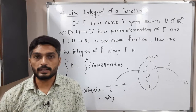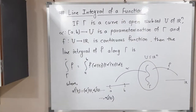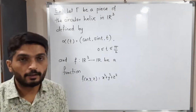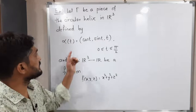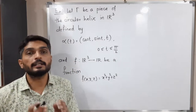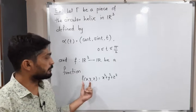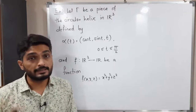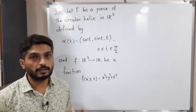Let us discuss one example so you can clearly understand this concept. In this example we have a part of a helix, whose parameterization is given as alpha(T) = (cos T, sin T, T), where T varies from 0 to pi by 2. We also have the function F(x, y, z) = x-squared plus y-squared plus z-squared. We have to find the value of the line integral of this scalar field F.